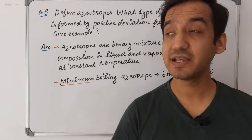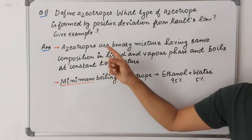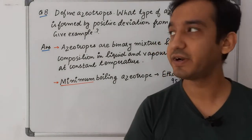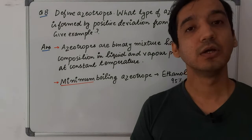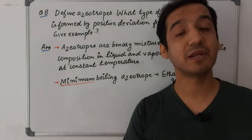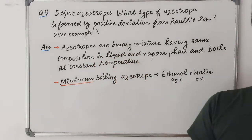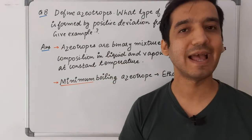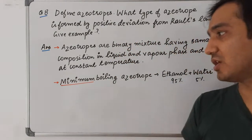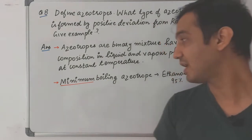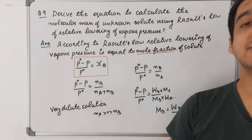Question 8: What is an azeotrope? Azeotropes are binary mixtures having the same composition in both the liquid phase and the vapor phase, and they boil at a constant temperature. When there is positive deviation from Raoult's Law, pressure increases, resulting in a minimum boiling azeotrope — they can boil at a lower temperature. Example: ethanol and water.